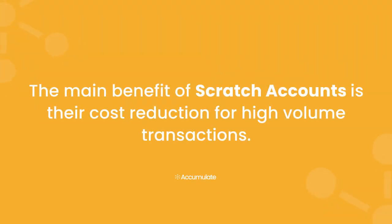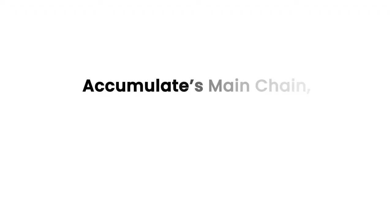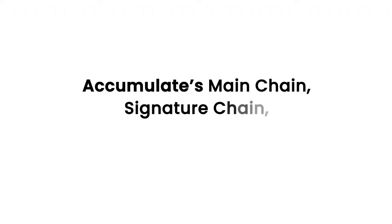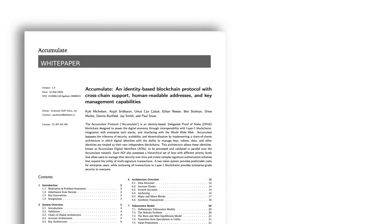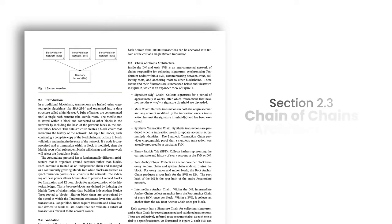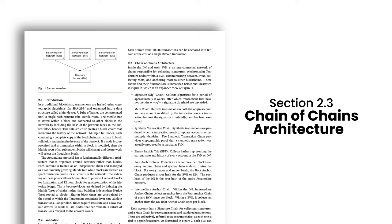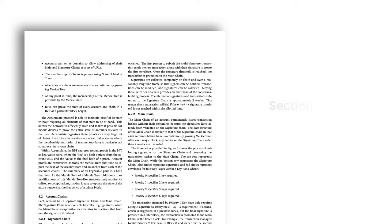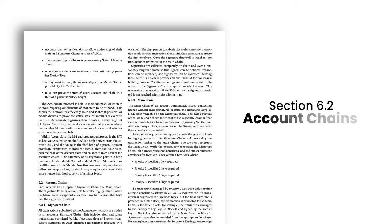The main benefit of scratch accounts is their cost reduction for high-volume transactions. To better understand how this works, we're going to walk through an example. But first, we need to review Accumulate's main chain, signature chain, and root anchor chain, which are described in a white paper linked below in section 2.3, Chain of Chains Architecture, and in section 6.2, Account Chains.